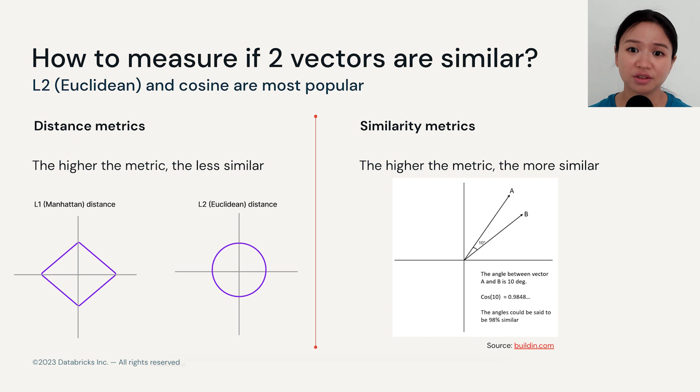For distance metrics, we commonly see L1 Manhattan distance or L2 Euclidean distance. Euclidean distance is often the more popular choice. As you can tell, when the distance metric gets higher, the less similar the vectors will be.